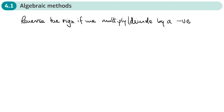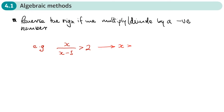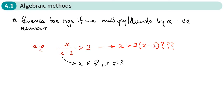Now let's say we don't know whether the number is positive or negative. For example, if I was trying to solve the inequality x over (x minus 3) is greater than 2, you might say let's just multiply both sides by (x minus 3). But the problem is that x can be any value apart from 3, and for some values of x the denominator is going to be positive and for others it's going to be negative.